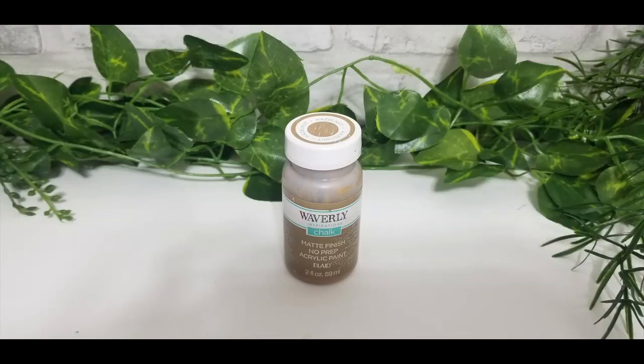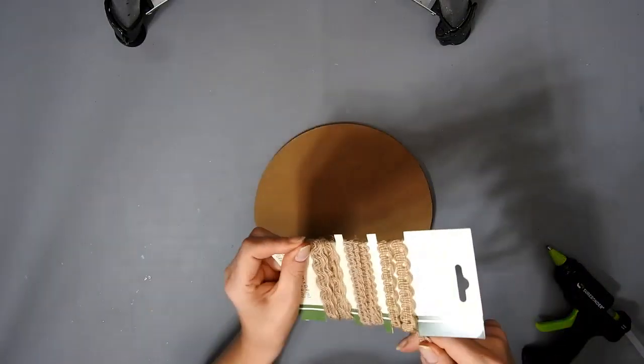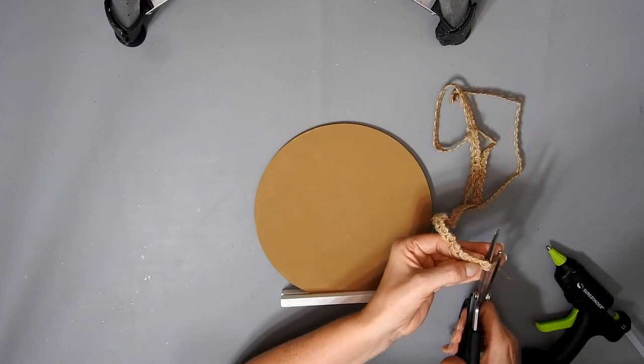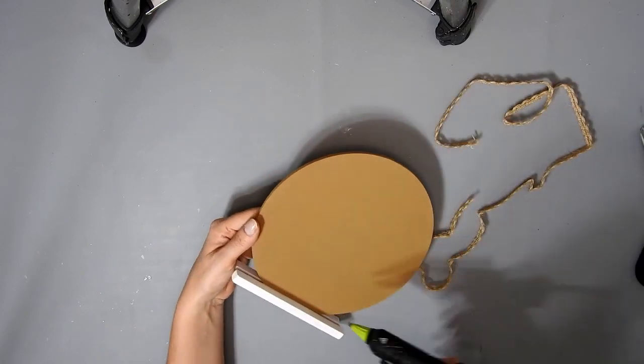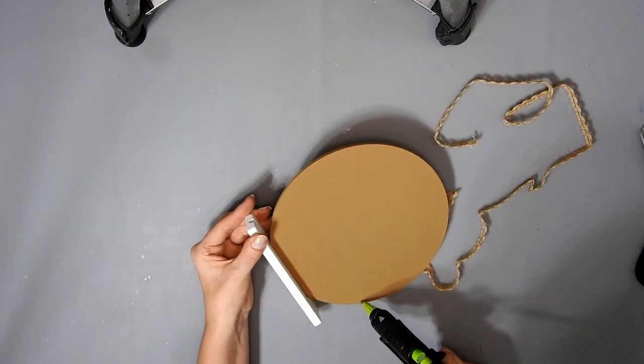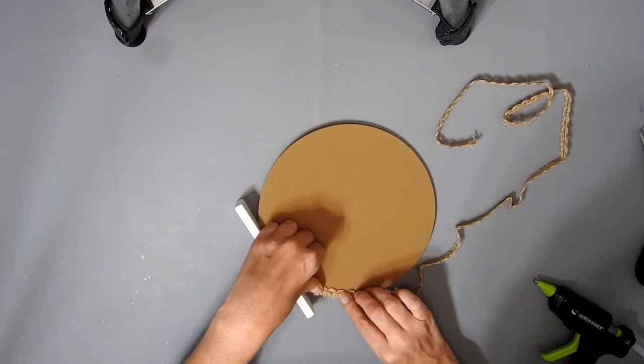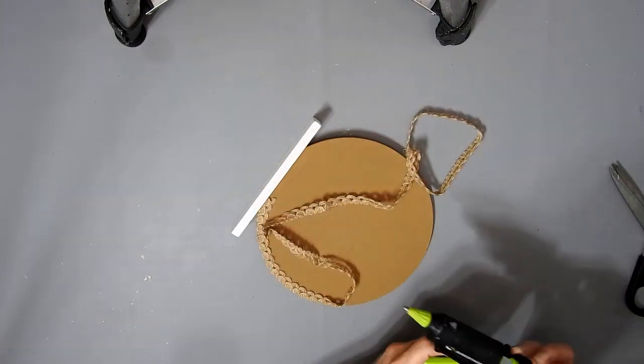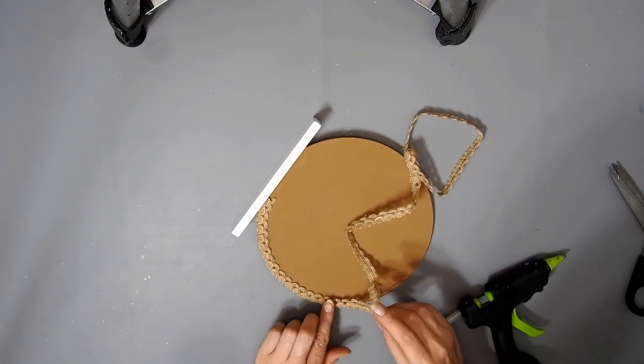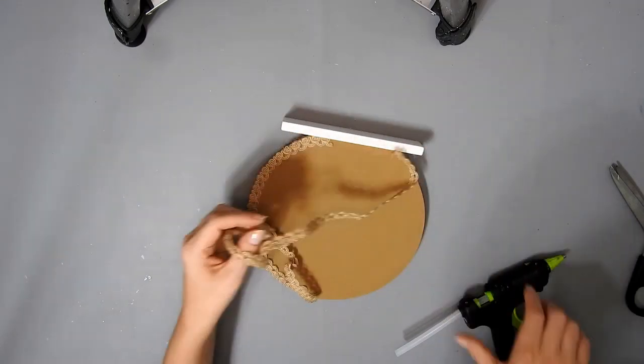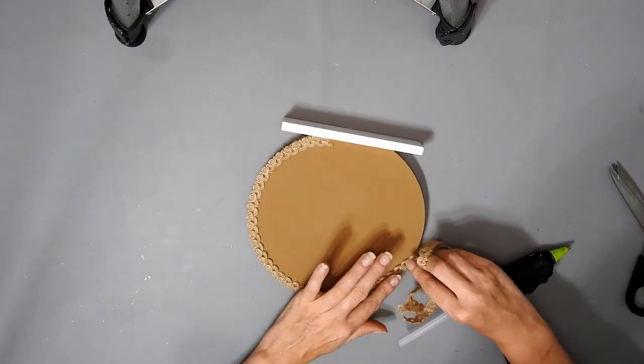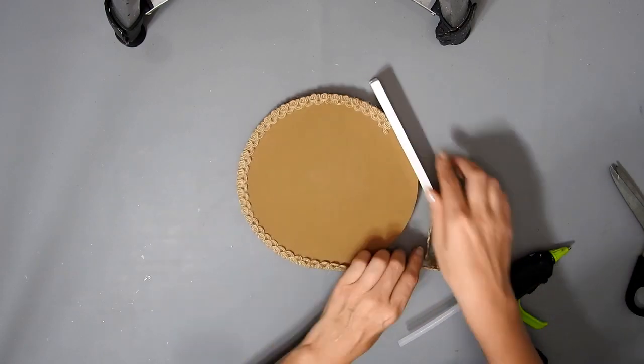Then I painted it with the Nutmeg Waverly chalk paint except the stand part, I left that. I'm going to use this burlap ribbon and I'm just going to glue it all around the outside of the circle.